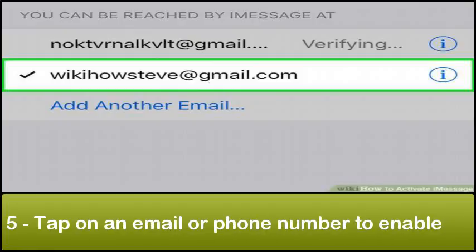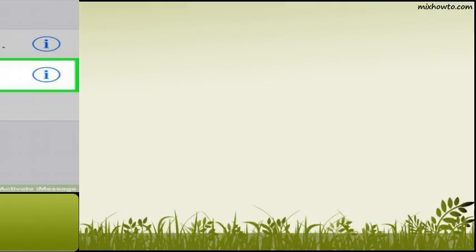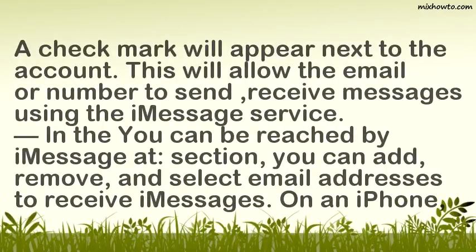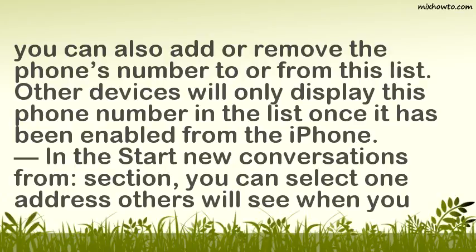Step 5: Tap on an email or phone number to enable. A check mark will appear next to the account. This will allow the email or number to send and receive messages using the iMessage service. In the 'You can be reached by iMessage at' section, you can add, remove, and select email addresses to receive iMessages. On an iPhone, you can also add or remove the phone number to or from this list. Other devices will only display this phone number in the list once it has been enabled from the iPhone.